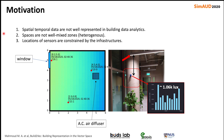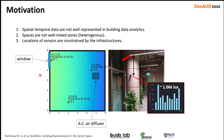The motivation behind this paper is that in many building data science analytics applications, the spatial-temporal attributes are not well represented. For example, when we try to predict the thermal comfort of a person in space, we usually just consider the personal and the environmental data, but rarely do we consider the location of the person in space.